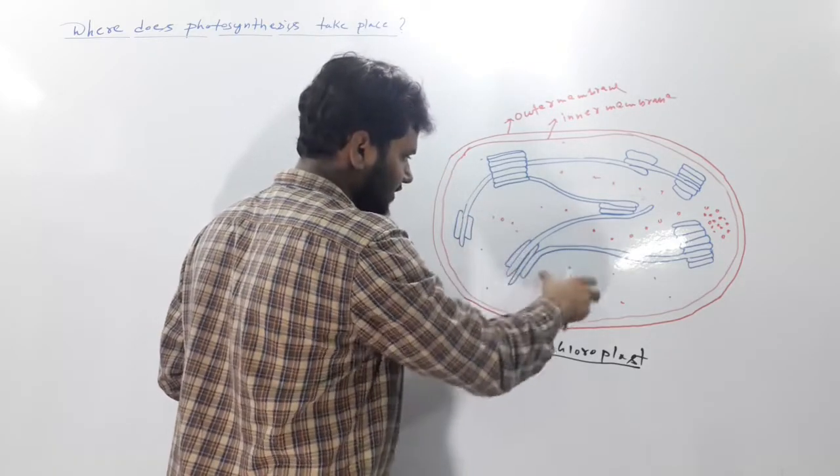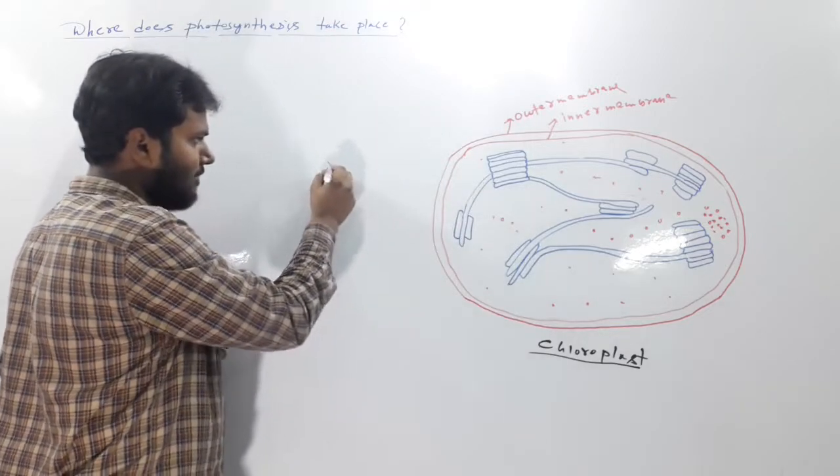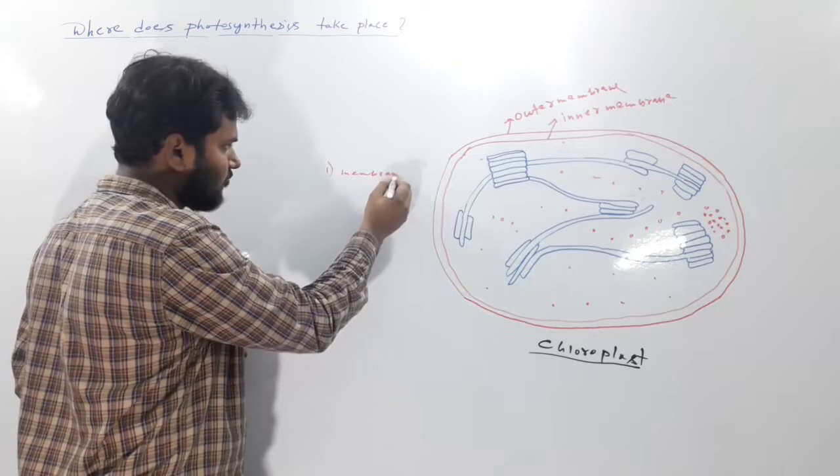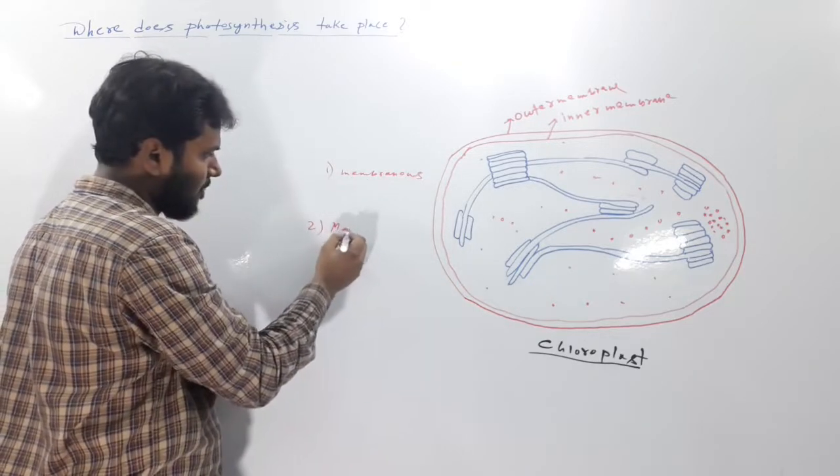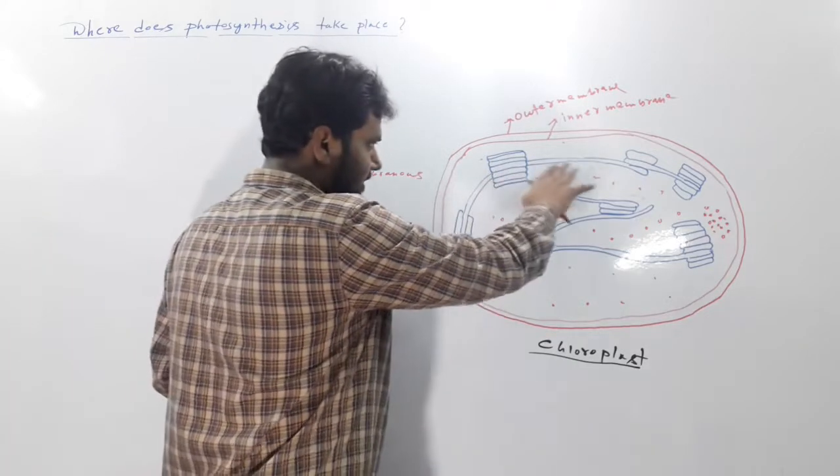There is one matrix. So inside the inner membrane we can have two structures: one is membranous and another one is matrix. These are membranous structures.